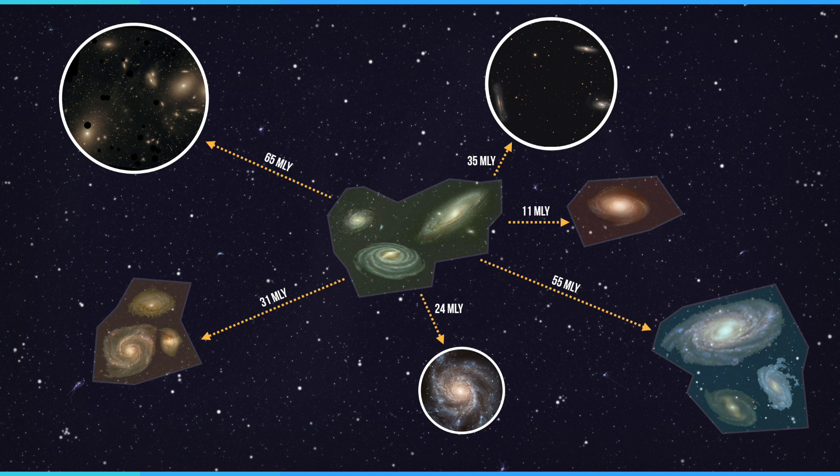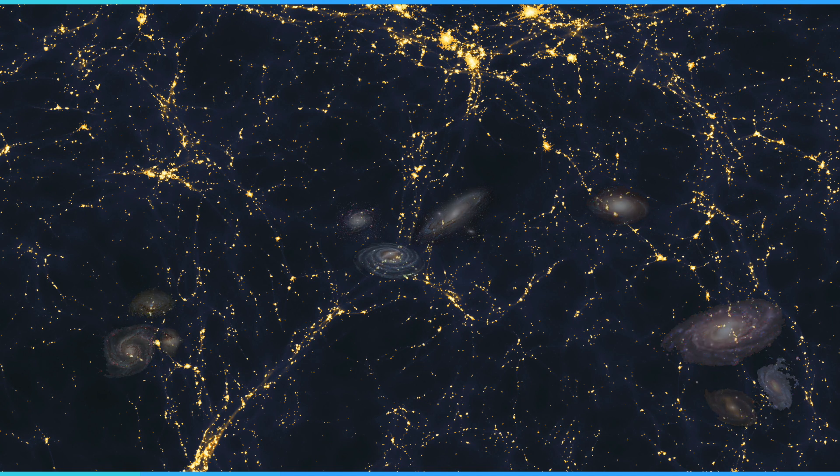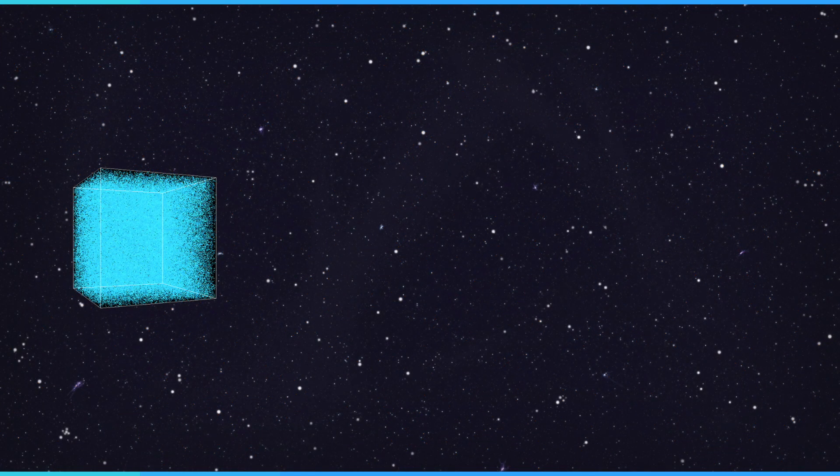These superclusters are linked with thread-like filaments of galaxies. Galaxies are not scattered through space randomly. They adhere to a web-like pattern that is formed under the influence of dark matter. This web-like structure creates filaments and between that is near-empty voids. The characteristics of this cosmic web were set in the aftermath of the Big Bang.